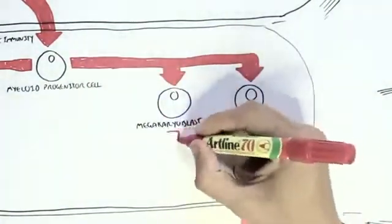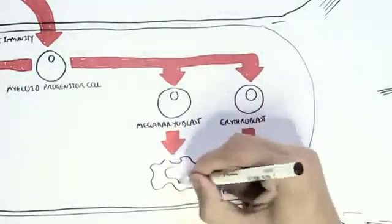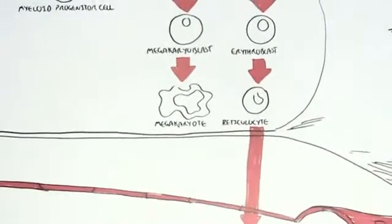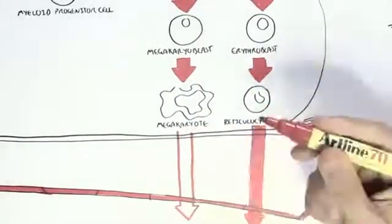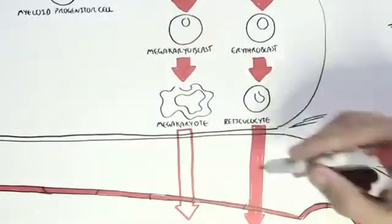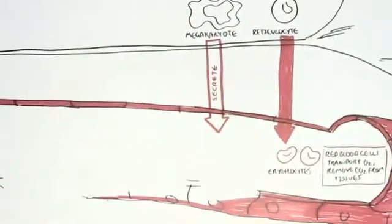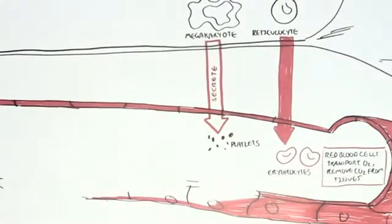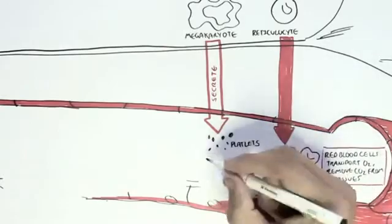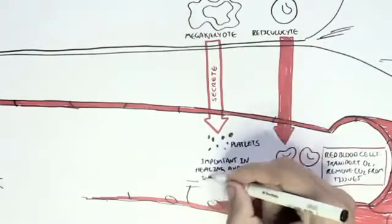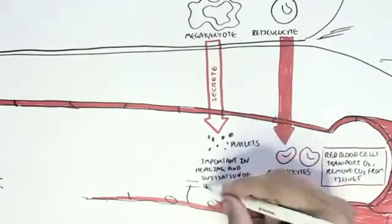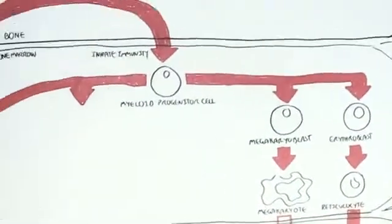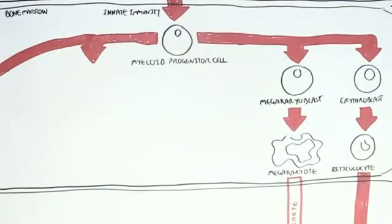The myeloid progenitor cells can also divide to produce what's called a megakaryoblast, which will later give rise to a megakaryocyte. This megakaryocyte will actually still stay in the bone marrow, but will secrete molecules known as platelets. Platelets play a critical role in the immune system in that they are important in initiating hemostasis and repair of tissue, and they circulate all around our body.